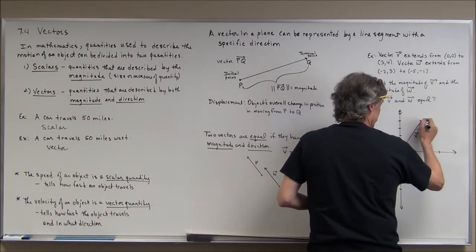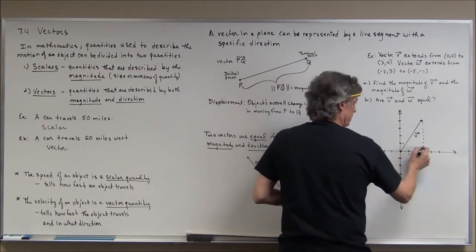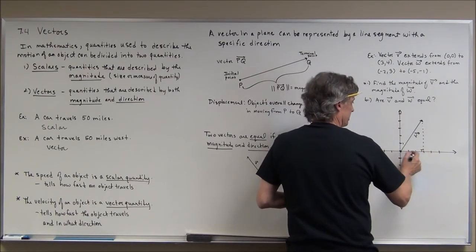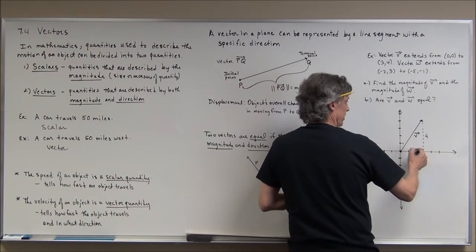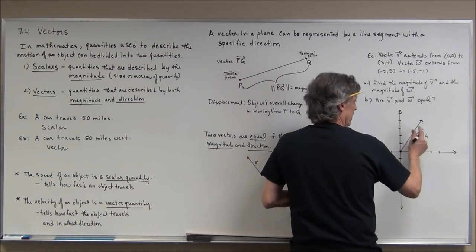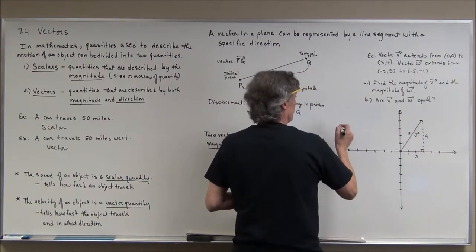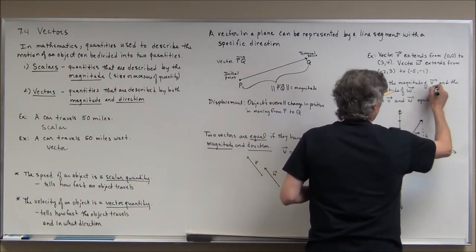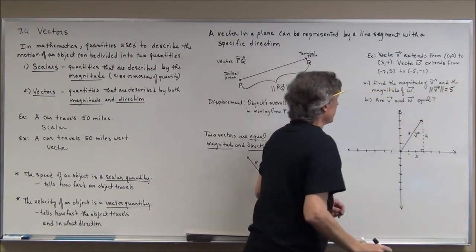Its magnitude would be the length of this line segment. Because I can construct a little right triangle here where this distance is 3 and this distance is 4, I can use the Pythagorean theorem to find that the length of this line segment is 5. This is a 3-4-5 right triangle, so the magnitude of vector v is 5.